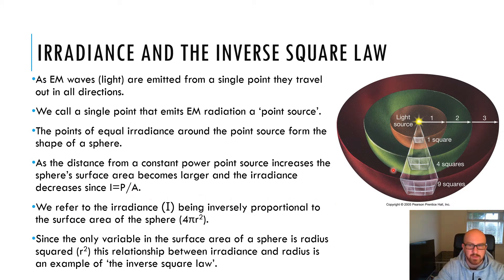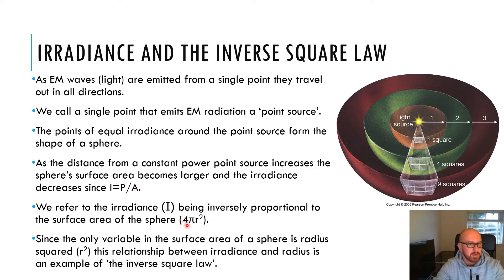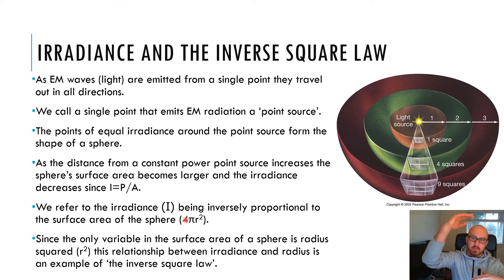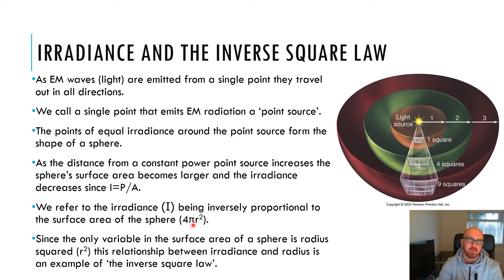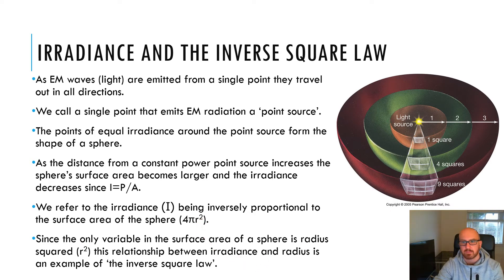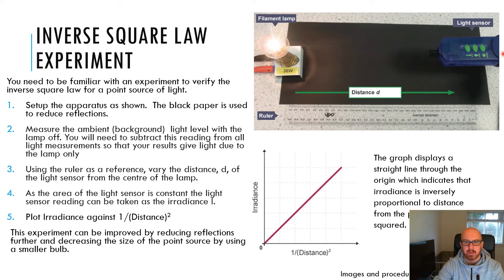The spheres themselves have an area. Going back to the formula, irradiance is power over area, and that area is the surface area of a sphere: 4πr². So irradiance I is inversely proportional to the surface area of the sphere. Since 4π is a constant, this is where the name inverse square law comes from — it's the inverse of the square, one over r squared. Let's look at the experiment you need to understand.